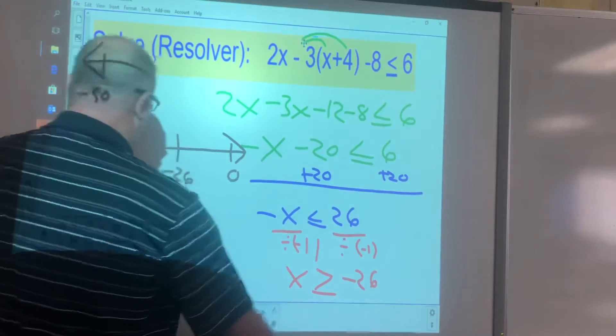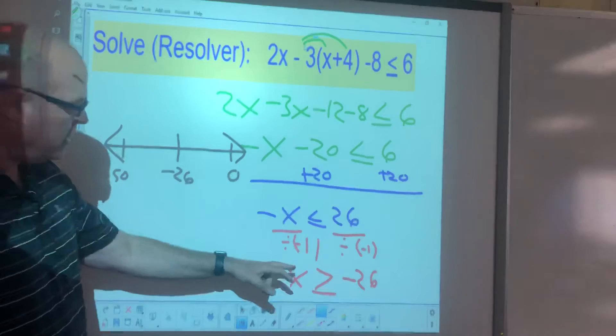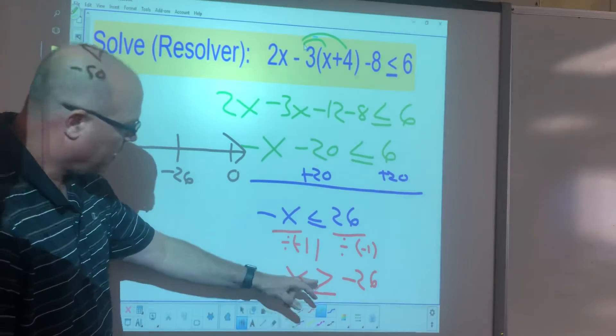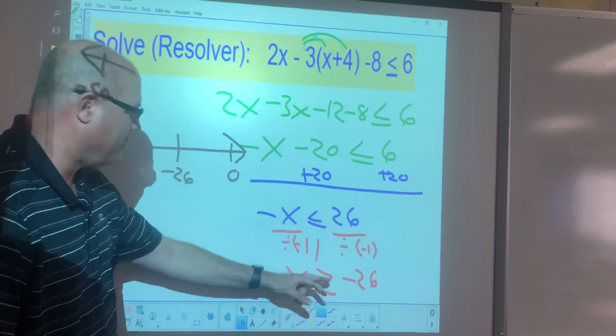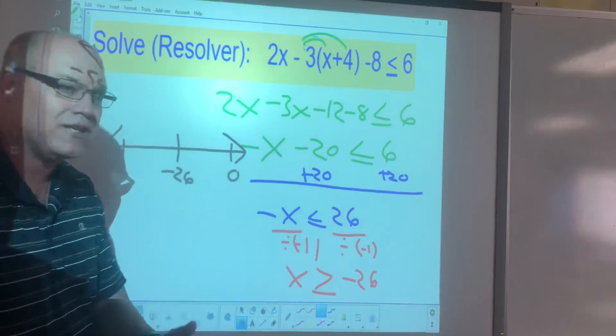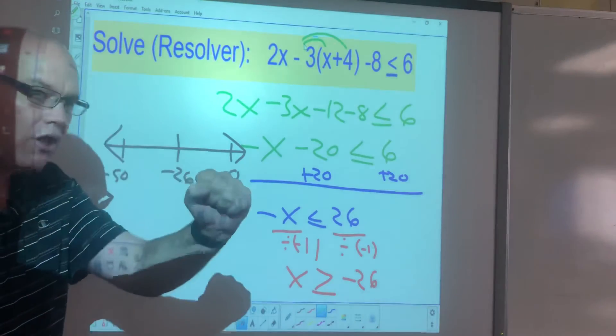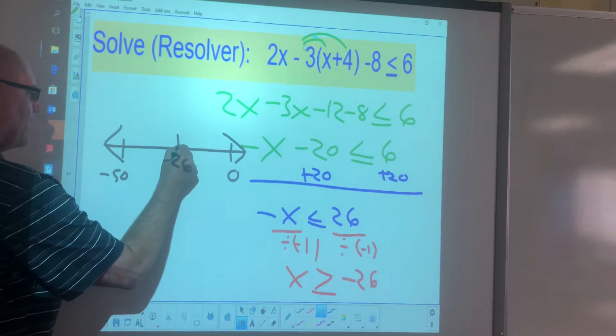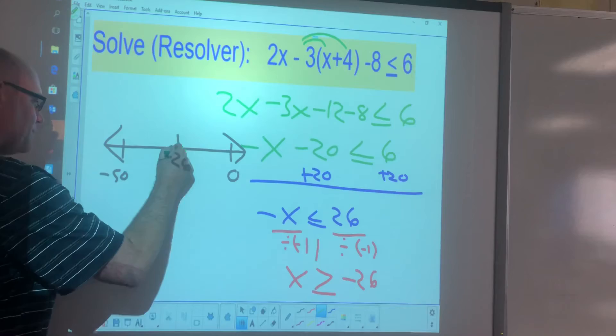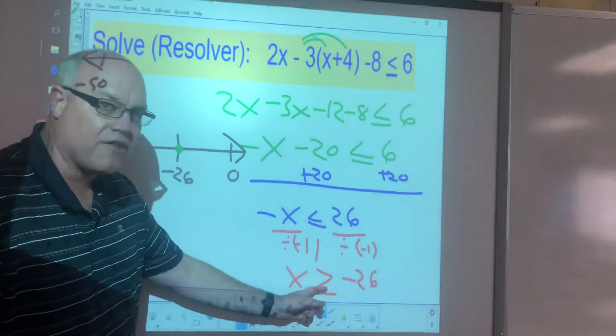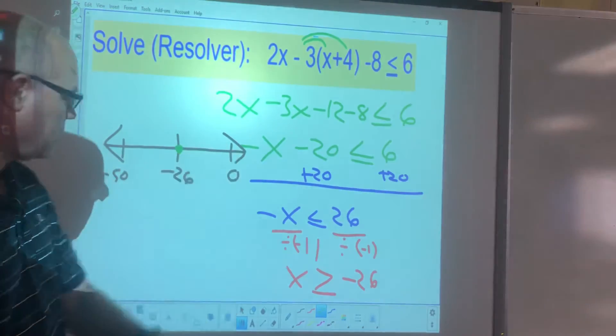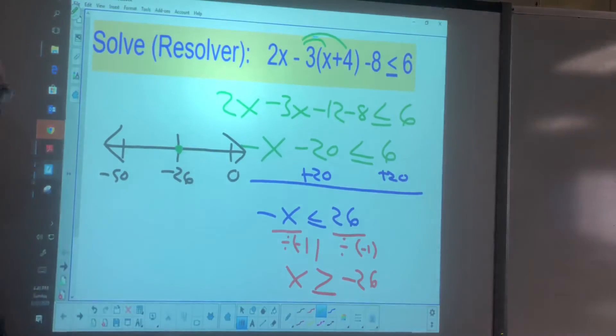So now we go to graph this on the number line. We need to decide if it's an open point or a solid point. Since this is or equal to, that means the negative 26 is included in the solution. So we're going to use a solid point. So at negative 26, I'm going to put a solid point. If this is just greater than problem, not equal to, then it would just be an open point, to show that that's not part of the solution.